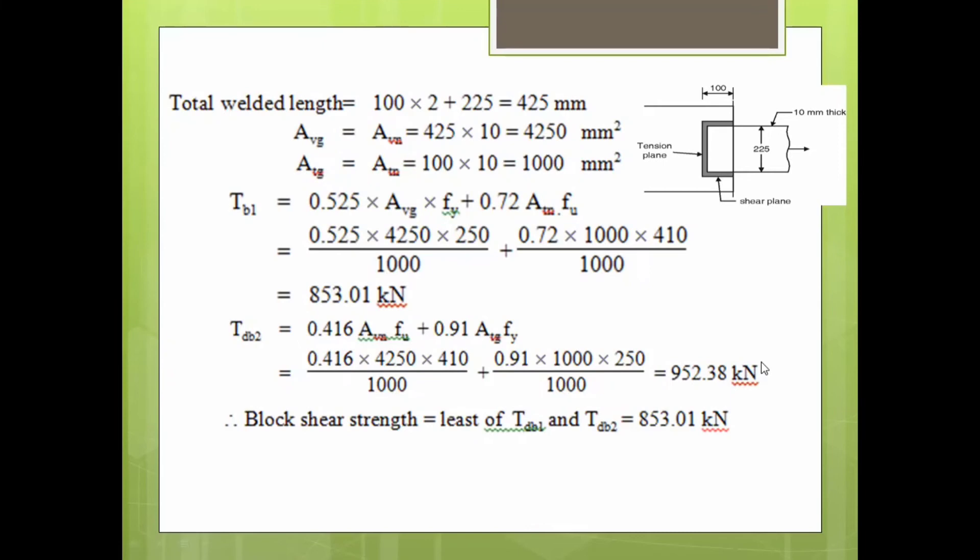The block shear strength will be the least of the two values, TDB1 and TDB2. So the final answer is 853.01 kilonewton.